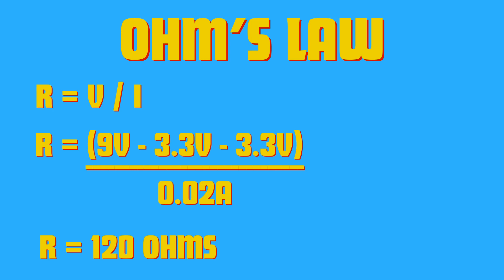Use Ohm's law to calculate the required resistance: resistance equals voltage divided by current. The blue LED has a forward voltage drop of around 3.3 volts. We subtract the two blue LEDs' voltage from the 9-volt battery power source. The rated forward current of a blue LED is around 20 milliamps, or 0.02 amps. The resistance for this circuit has to be at least 120 ohms.